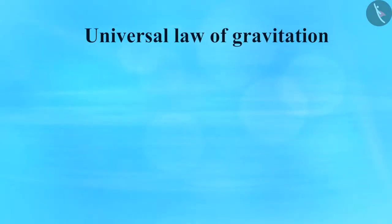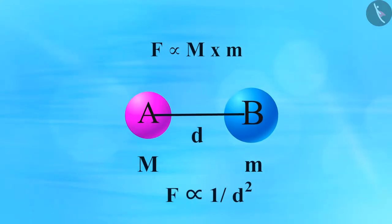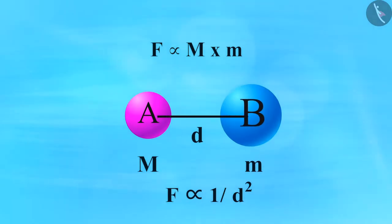The universal law of gravitation states that the force between two objects in the universe is directly proportional to the product of their masses and inversely proportional to the square of the distance between them. The force is directed along the line joining the center of two objects.